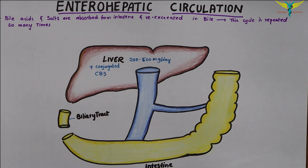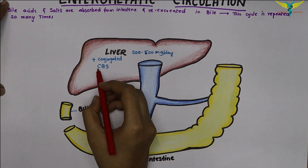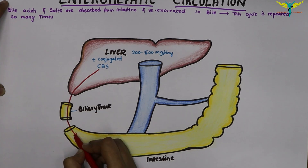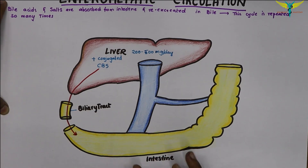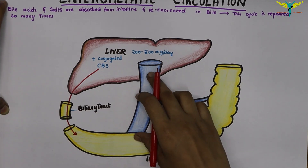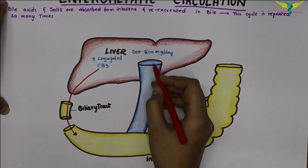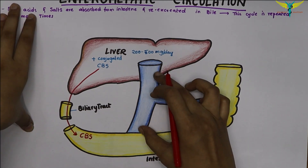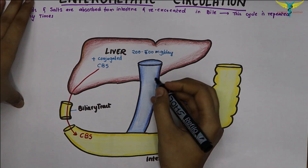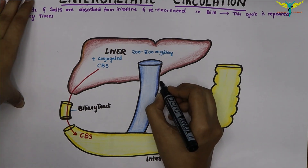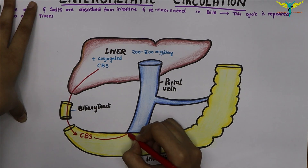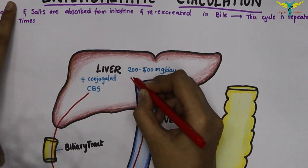These conjugated bile salts pass through the biliary tract to enter the intestine. From the intestine, they are absorbed into the portal blood circulation and reach the liver. The CBS travel through the portal vein to reach the liver.